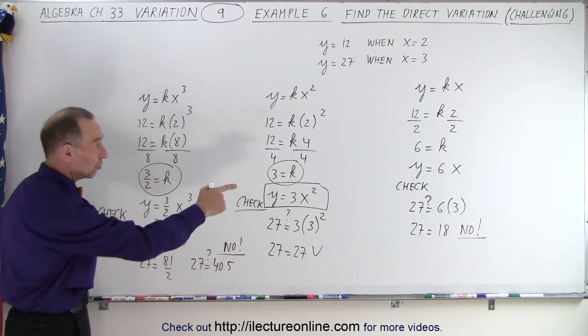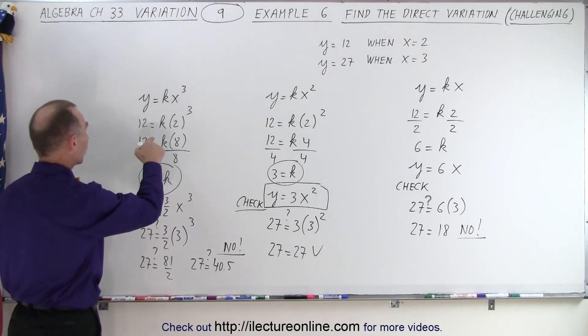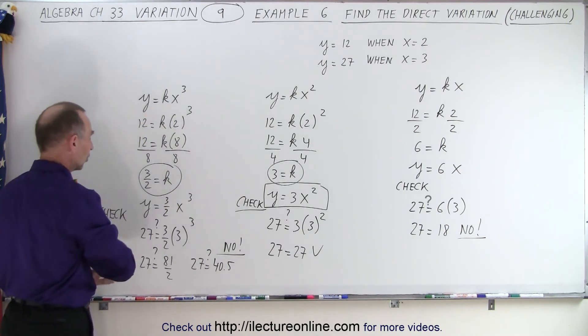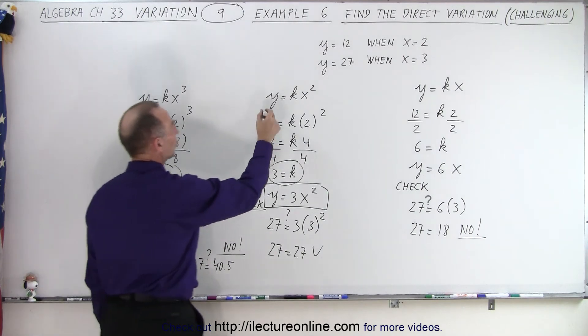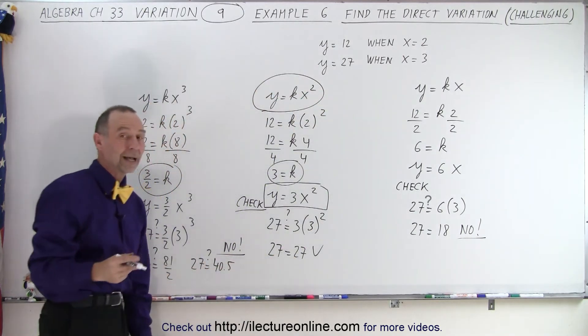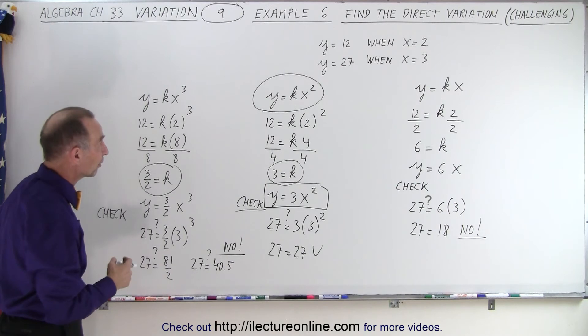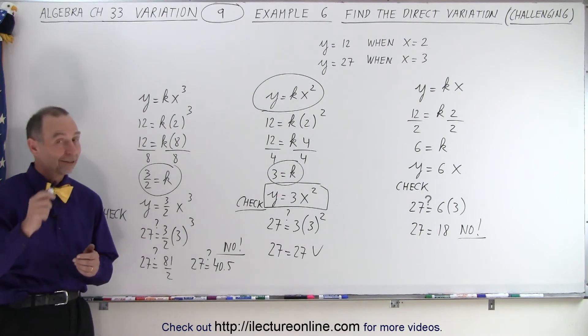So notice that the first equation, y equals kx, and the third equation, y equals kx cubed, does not work. But the second equation, y equals kx squared, where y directly varies with x squared, does work. And we find the correct value for k, which is equal to 3. And that is how that's done.